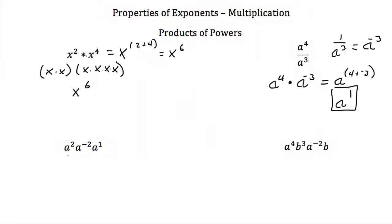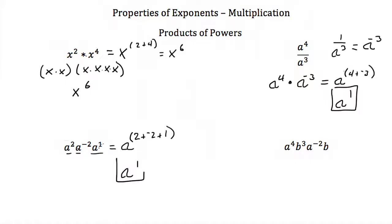Our next example: a squared times a to the minus 2 times a to the 1. We're multiplying all these together and they all have the same base, so this equals a to the sum of all exponents: 2 plus negative 2 plus 1. Well, 2 plus negative 2 is 0, plus 1 is 1, so this is just a to the first power.